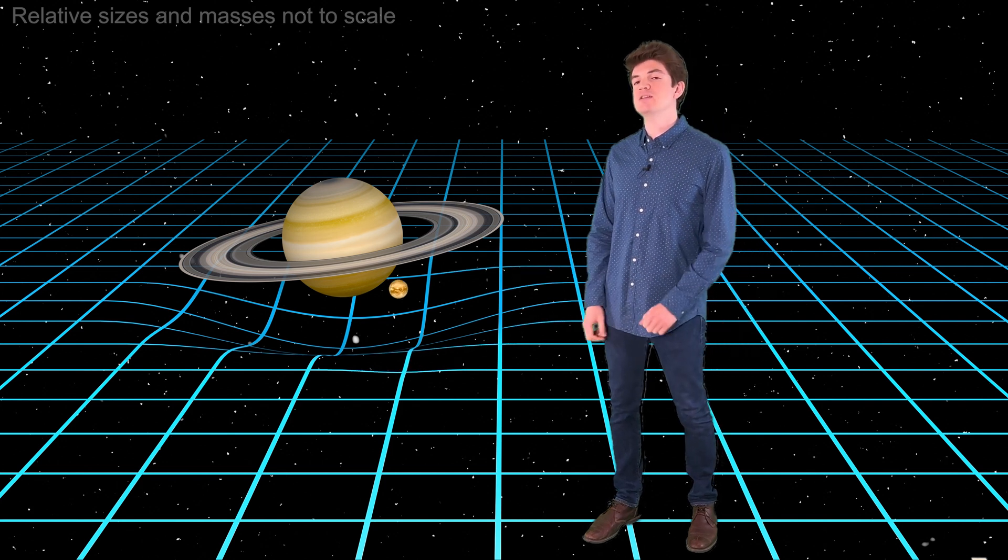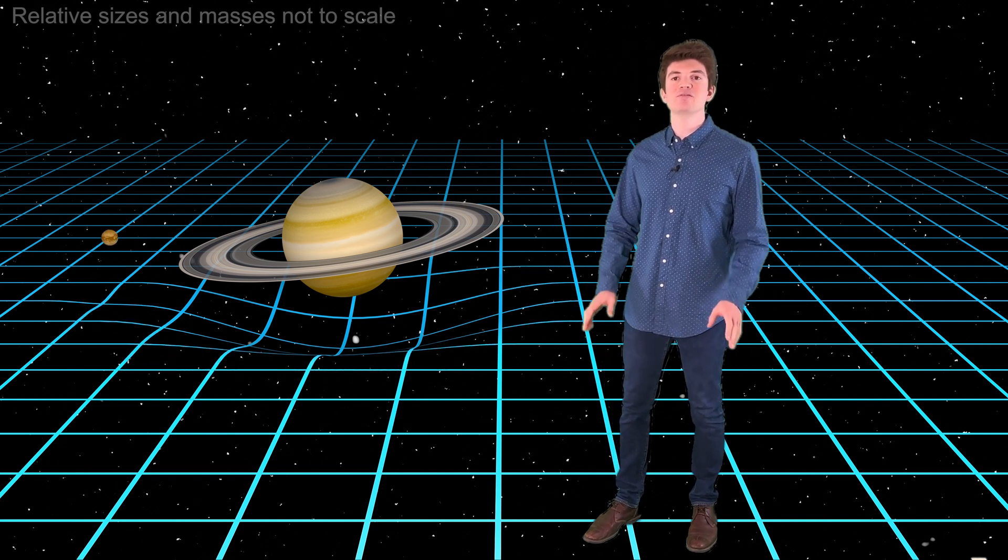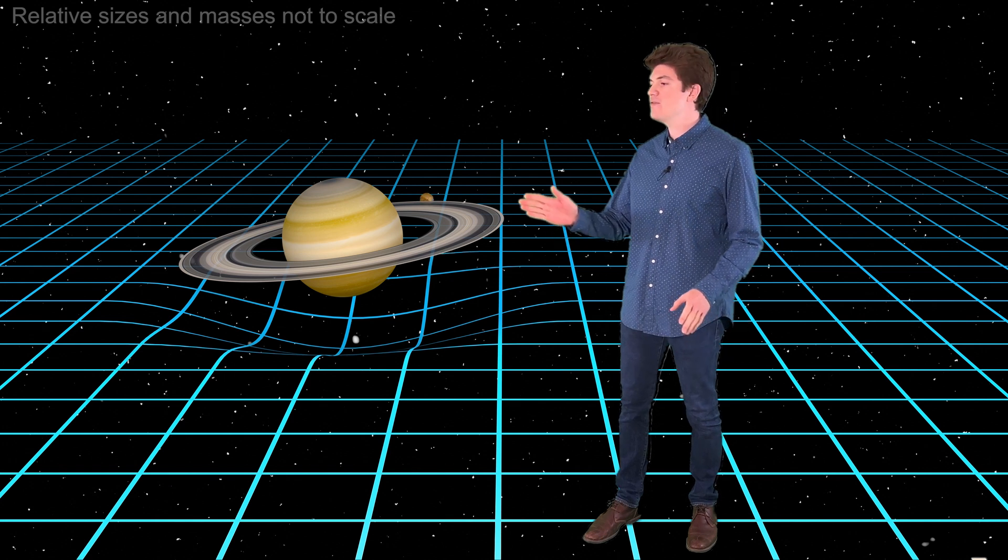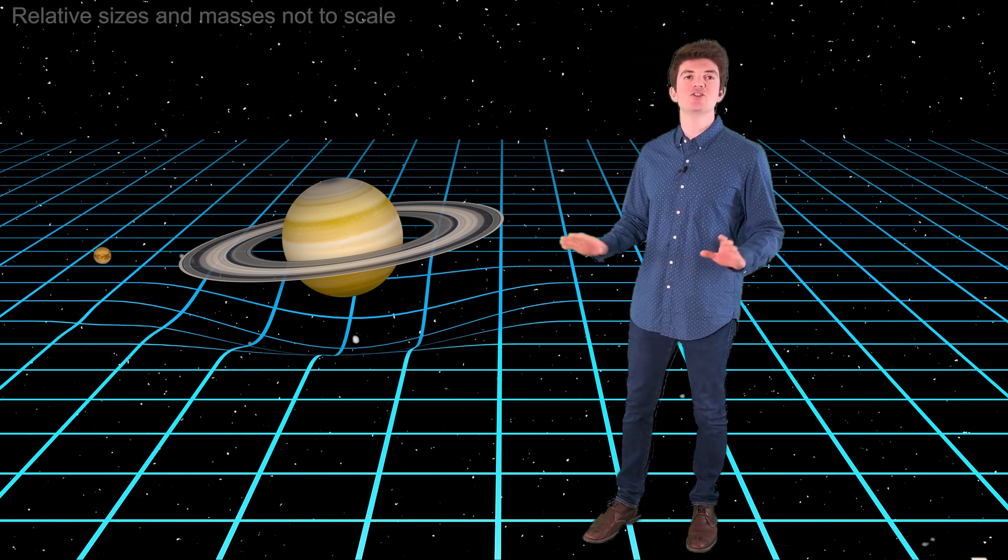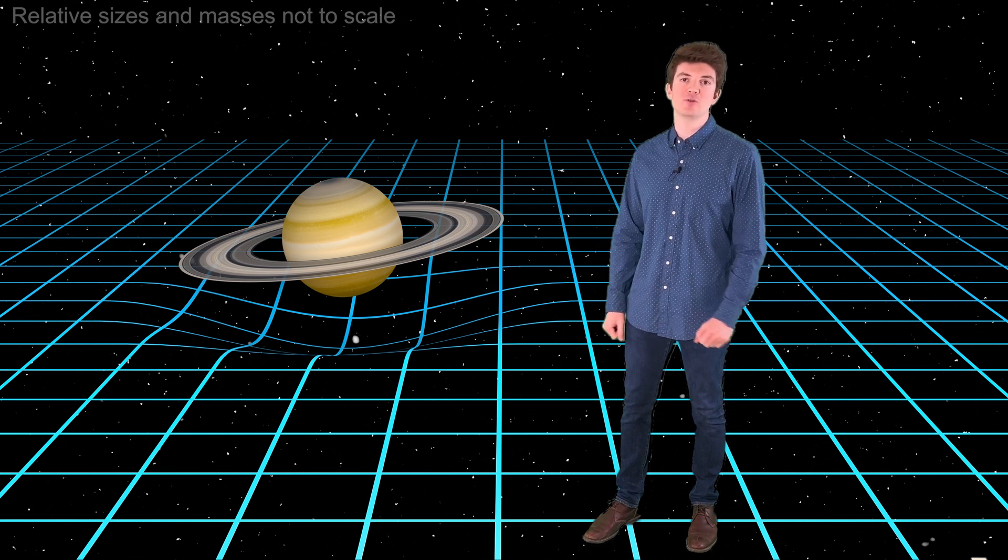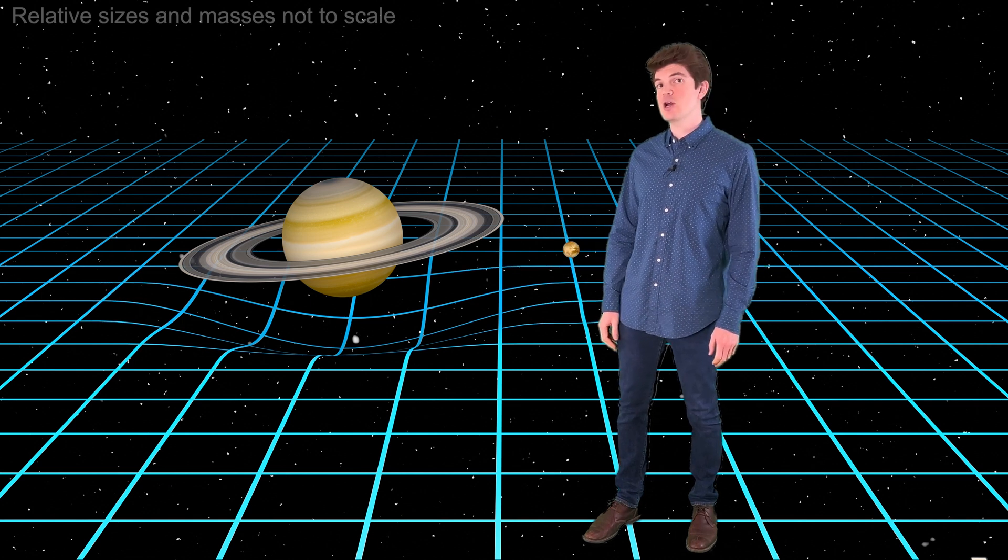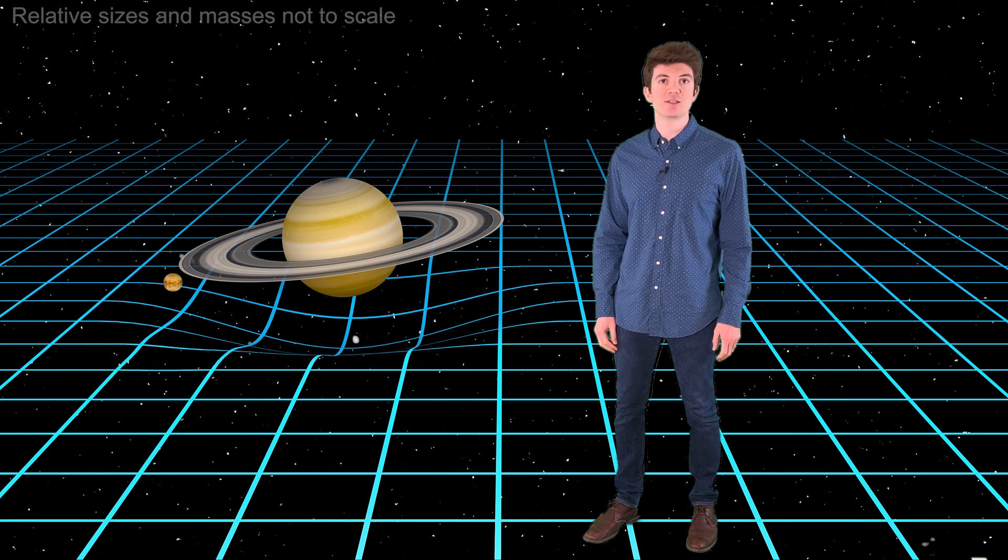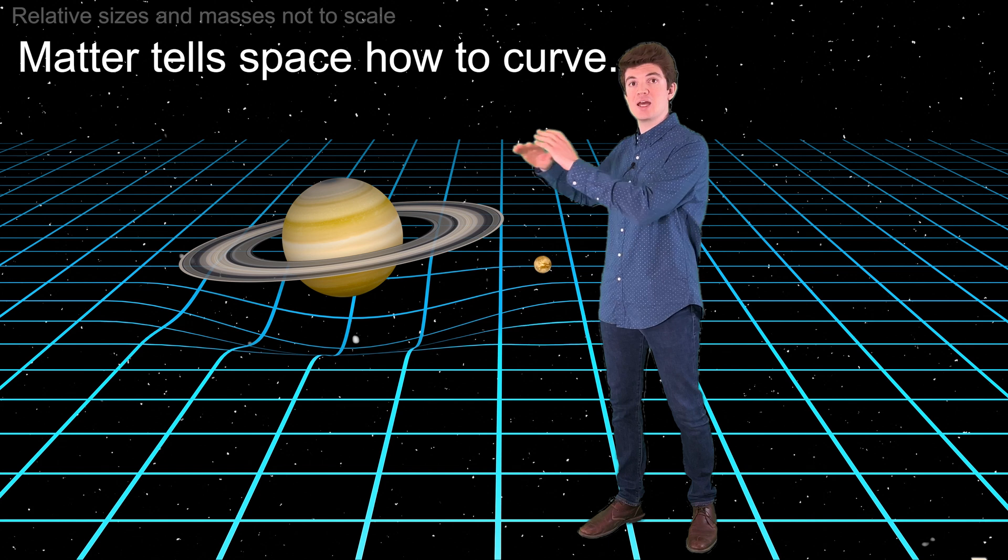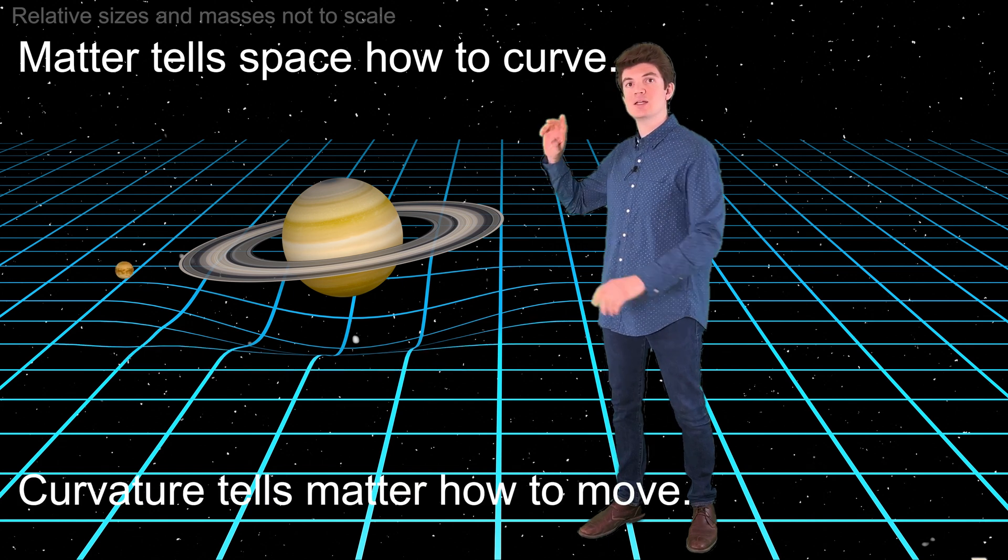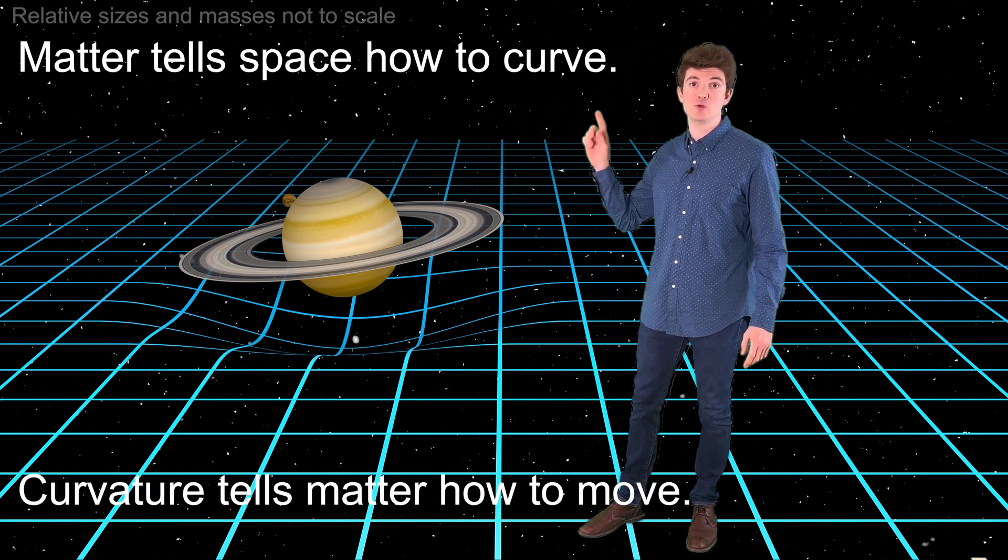General relativity tells us that this deflection of objects away from straight paths due to the curvature of space-time is the true definition of gravity. To summarize general relativity in two sentences, matter tells space-time how to curve, and the curvature of space-time tells matter how to move.